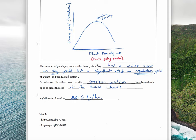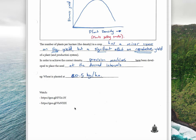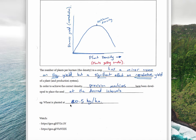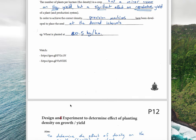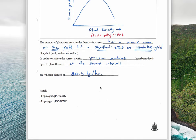The number of plants per hectare, or the density that we want to plant our crop, will have a minor effect on vegetative yield but a significant effect on reproductive yield of a plant. In order to achieve the correct density, we use precision machines developed to place the seed at desired intervals. The example here for wheat is 80.5 kilograms per hectare. You can watch these videos which show an example of precision seeders that seed at exactly the desired density so that you get ideal growth and spend as little as possible on seeds while getting the maximum output or yield.